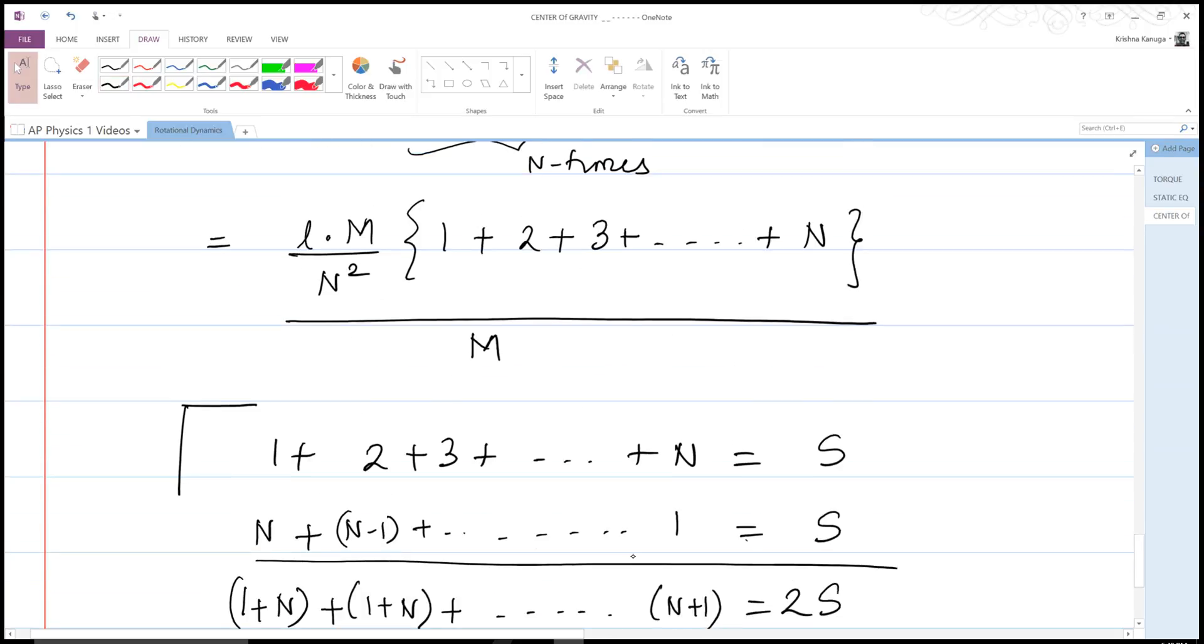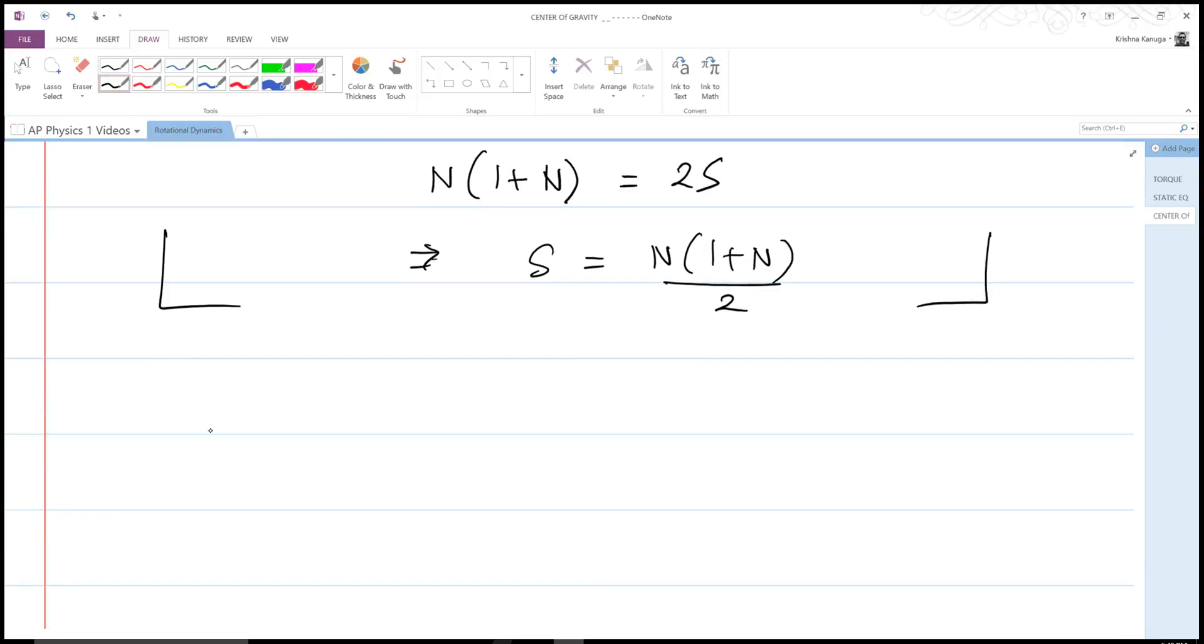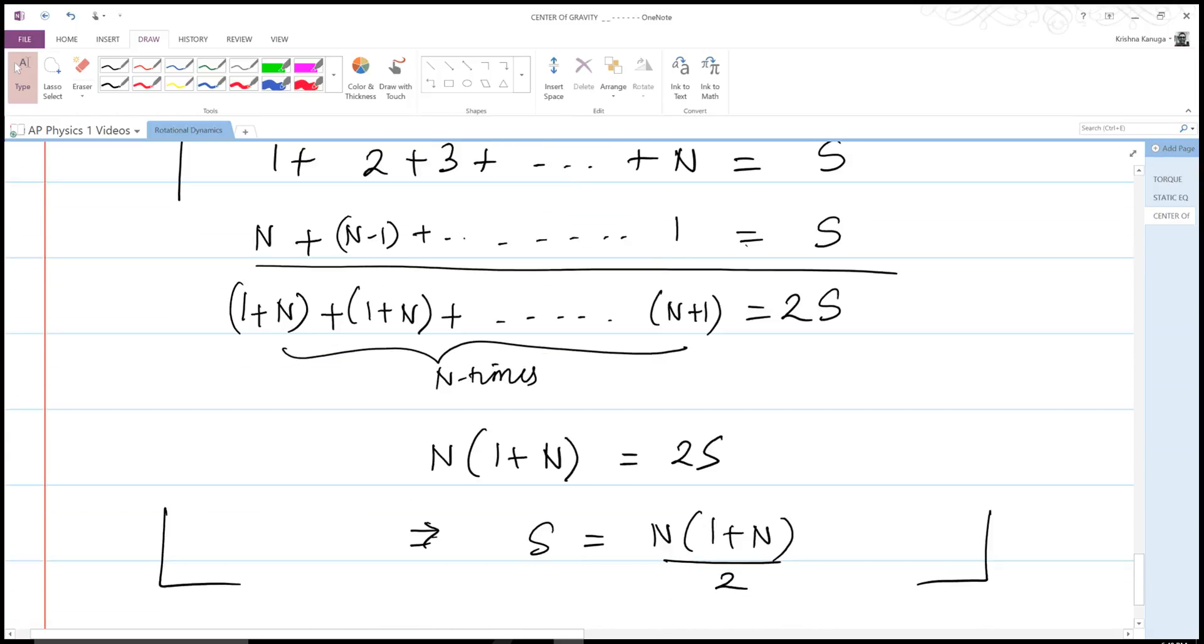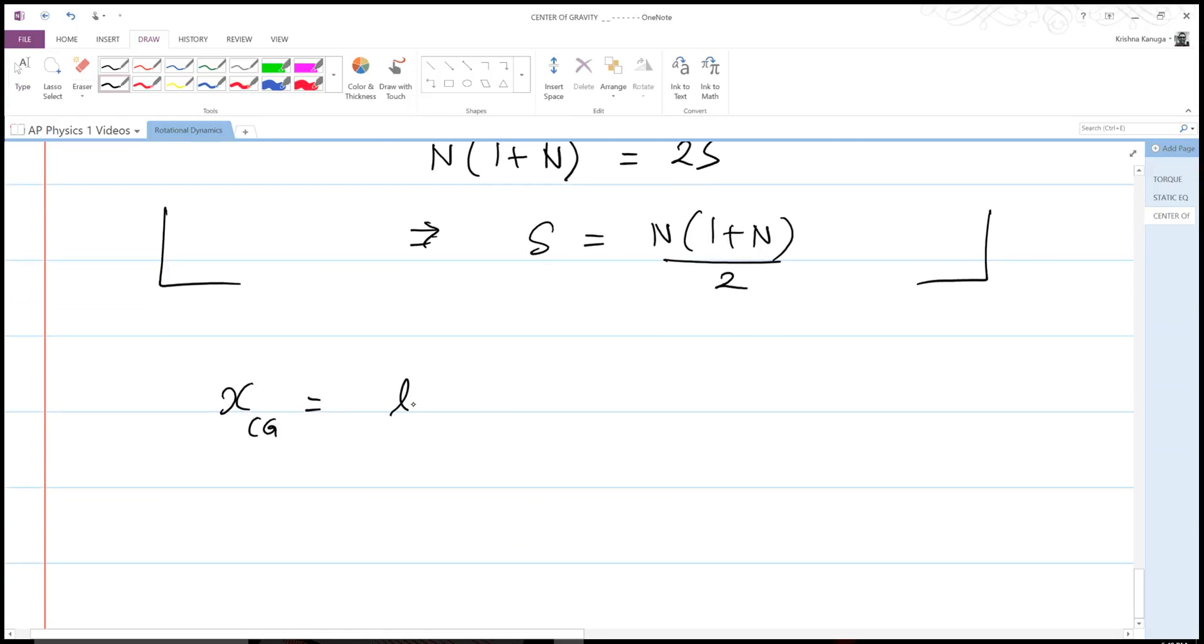Then go back to our expression. What we know is that our X center of gravity now is equal to—what is it—L over N squared, because we know that the M's have cancelled. Then I'm going to multiply this by N times 1 plus N all over 2.